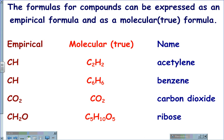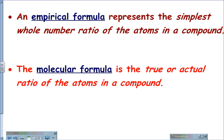CH2O could be C5H10O5 for ribose or C6H12O6 for glucose. Therefore, an empirical formula represents the simplest whole number ratio of the atoms in the compound, while the molecular formula is the true or actual ratio of the atoms within the compound.